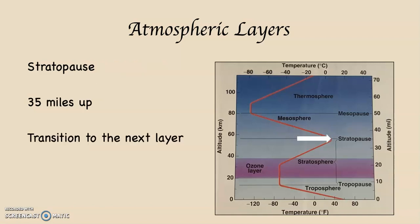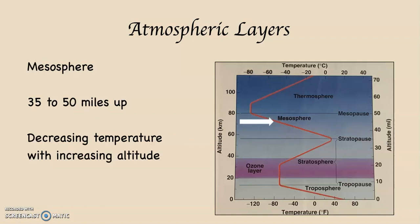At 35 miles up, we hit the stratopause, the next doorway to the next layer. This is where we transition from the stratosphere into the mesosphere. In the mesosphere, we go back to the same profile as the troposphere: decreasing air temperature with increasing altitude. That happens from about 35 miles up until the ceiling of the mesosphere, which is 50 miles up.